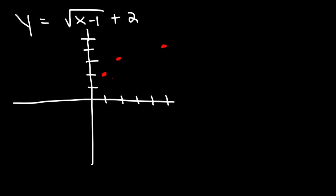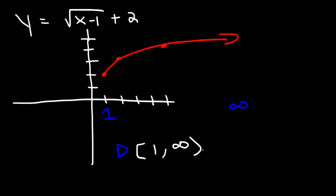Those are the key points for the graph. To analyze the domain, we look at the x values — the lowest x value is 1 and the highest is infinity, so the domain is [1, ∞), using a bracket since it includes 1, and a parenthesis for infinity. For the range, the lowest y value is 2 and the highest goes to infinity, so the range is [2, ∞).